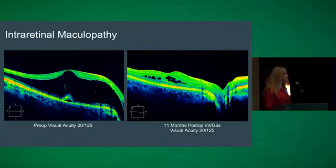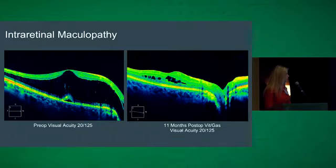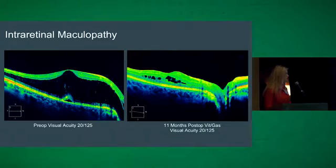Here is the OCT example of our intraretinal maculopathy. You can see on the left a giant schesis-like separation of the retina — the patient's pre-op visual acuity was 20/25 — and in the right corner, the direct connection down to the optic pit. This patient had a successful vitrectomy and long-acting gas tamponade that closed off the pit-fovea connection, and the fluid resolved over several months. At 11 months post-op, a small amount of fluid remained, which we expect to continue resolving.